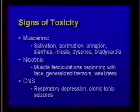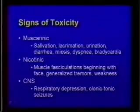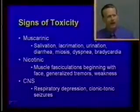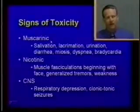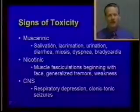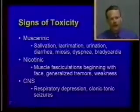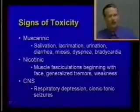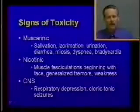The toxicity seen from organophosphates and carbamates falls into three categories depending on the type of receptor affected. The first category is muscarinic signs, based on effects at the muscarinic acetylcholine receptor. These are the traditional SLUDGE symptoms: salivation, lacrimation, urination, diarrhea, miosis of the pupils, dyspnea, and bradycardia.